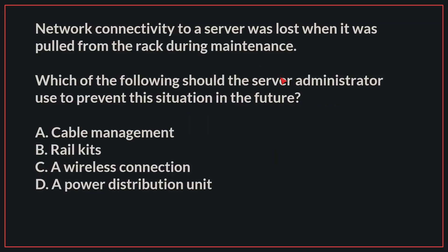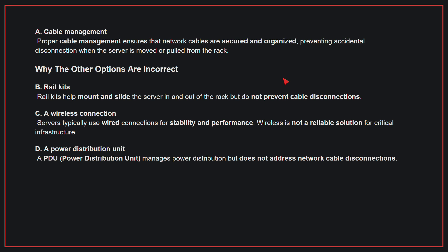Network connectivity to a server was lost when it was pulled from the rack during maintenance. Which of the following should the server administrator use to prevent this situation in the future? The correct answer is A: Cable management. Proper cable management ensures that network cables are secured and organized, preventing accidental disconnection when the server is moved or pulled from the rack.